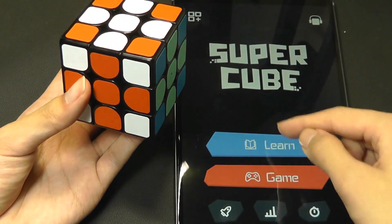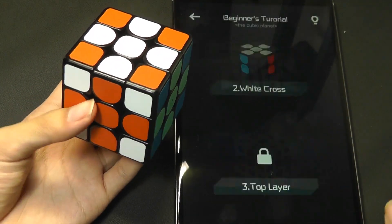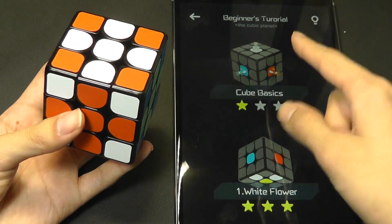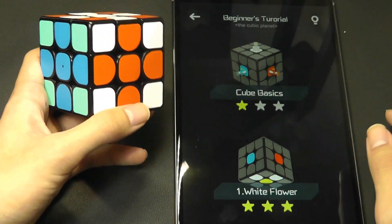The actual games and levels are really in these two modes: the learn and the game mode. Under the learn mode, you can start from the beginning, and what it does is introduces the basics of the cube.